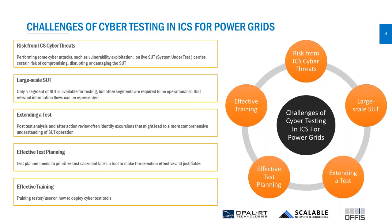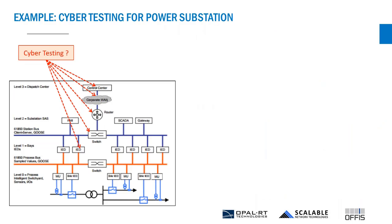Let's take a deeper look using an example. Let's say we need to test a power subsystem. The architecture shown here is a typical power subsystem. At the lowest level — level zero, or process level — you have different sensors, IO devices, control components, and power equipment.